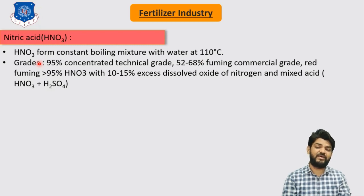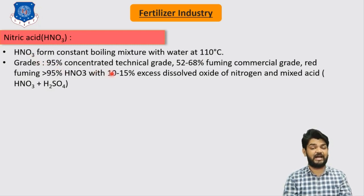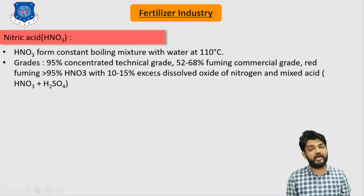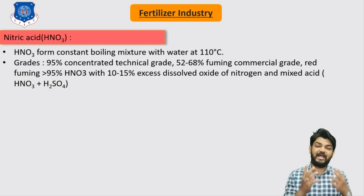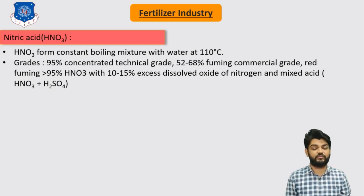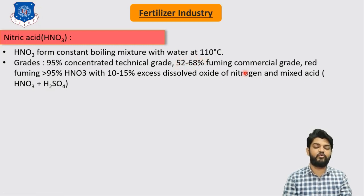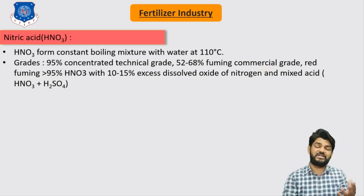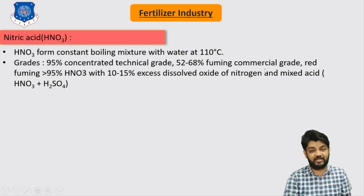Different grades of nitric acid are available: 95% concentrated nitric acid is the technical grade, mainly used for laboratory purposes — it is highly concentrated and highly corrosive. There is also 52 to 60% fuming commercial grade nitric acid, used in the dyes industry and dyes intermediate industry.